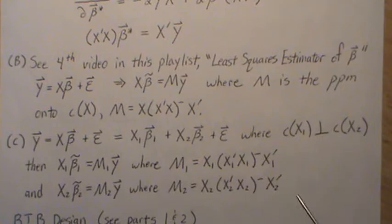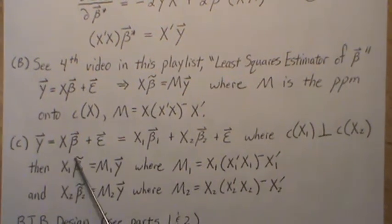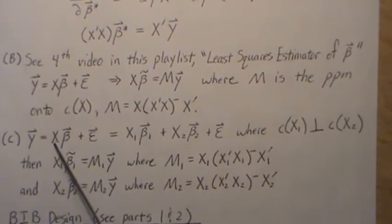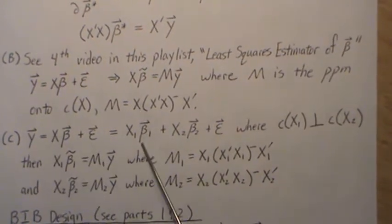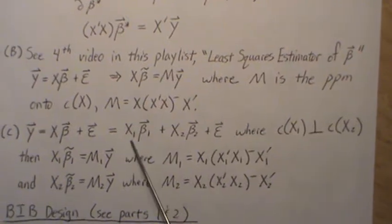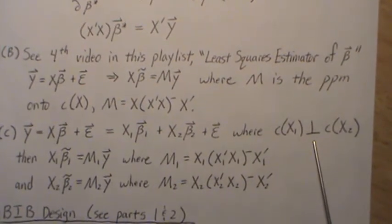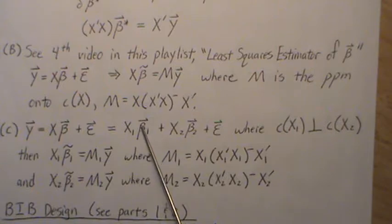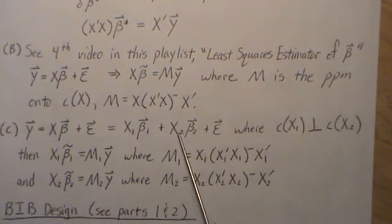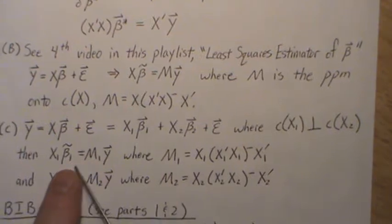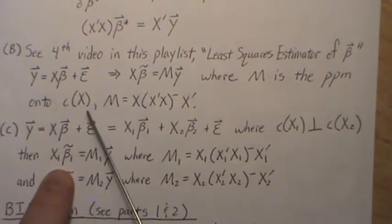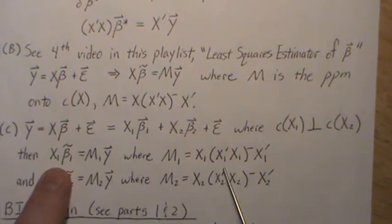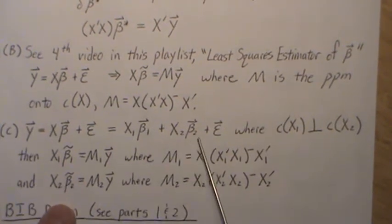The third property that we're going to reference but not prove is if we have a linear model, then we partition the beta parameters into, say, beta 1 and beta 2. That means we partition the design matrix. So when we do this multiplication, we get this. Now, if the column spaces of x1 and x2 are orthogonal, then to find the least squares estimates for the beta 1 parameters—remember this is a vector—we don't need this information here.